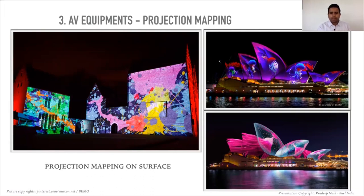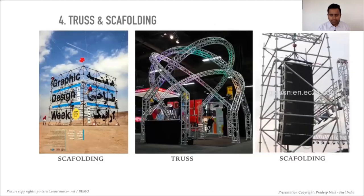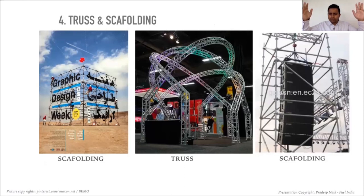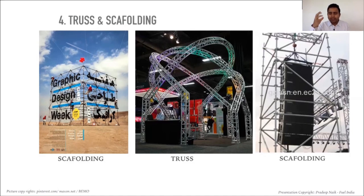The fourth category is trussing and scaffolding. All the lighting on a stage goes on truss, or on T-truss or lighting truss positioned slightly away from the stage. The main purpose of truss is to achieve the visual identity of the stage and to provide mounting points for sound and lights. The first image shows scaffolding, which can be used for branding, backdrops, or for hanging line array sound systems in outdoor events.